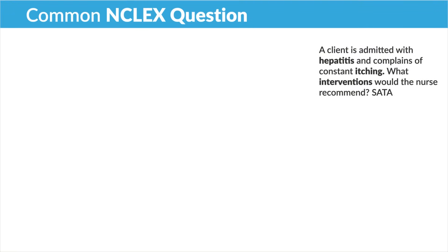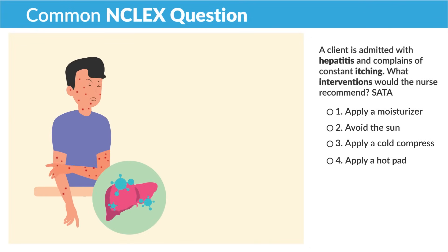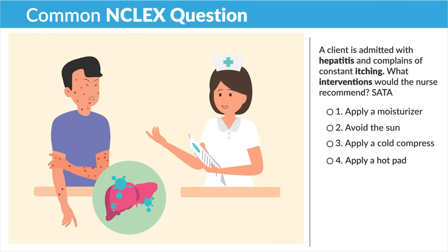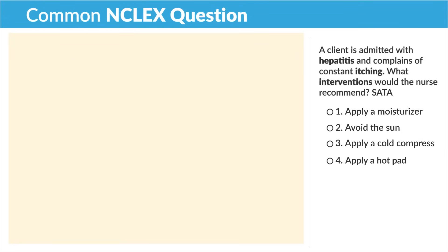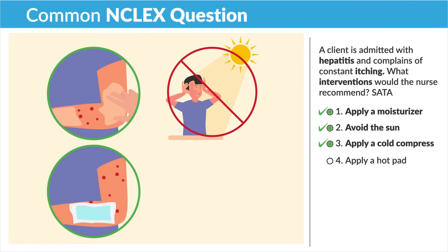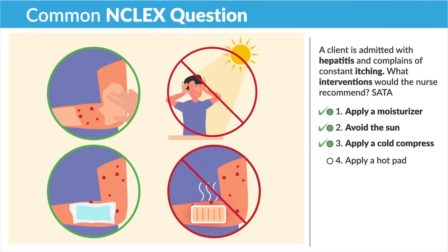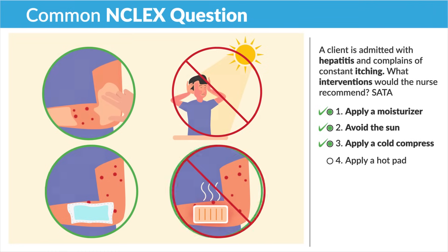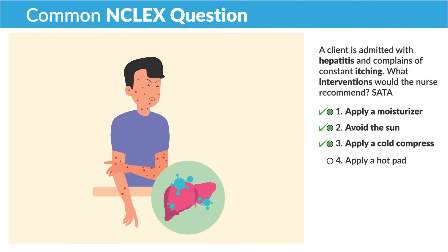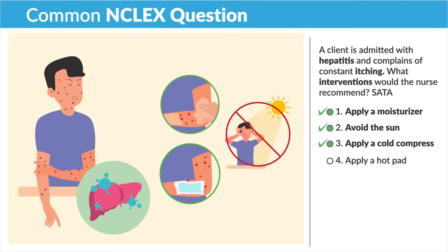A top missed NCLEX question: 'A client admitted with hepatitis complains of constant itching — which intervention would the nurse recommend?' Applying a moisturizer, avoiding the sun, and applying a cold compress are all correct. Applying a hot pad is incorrect — avoid heat. Cold compresses, moisturizers, and staying out of the heat best treat hepatitis-related itching.